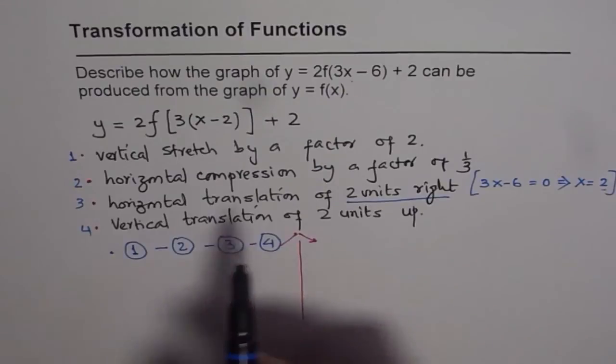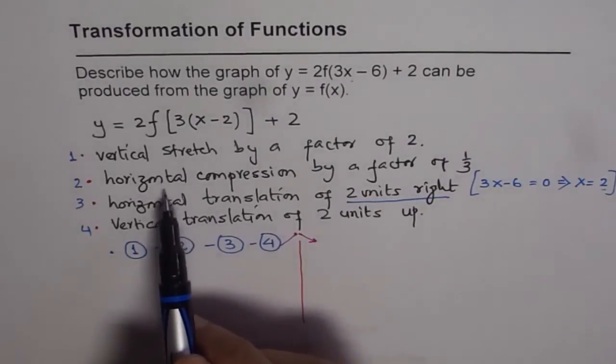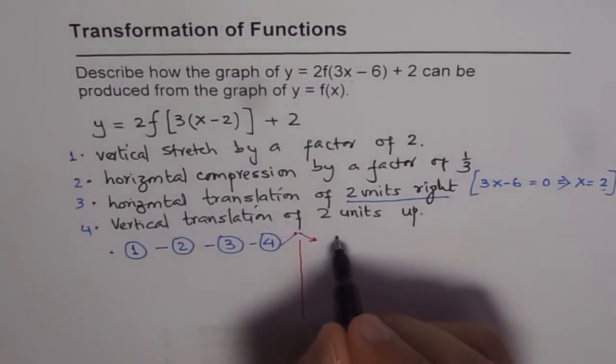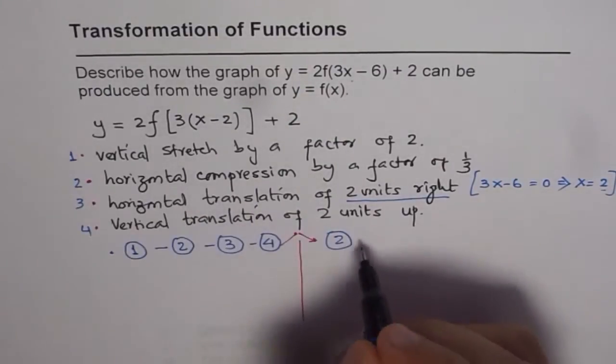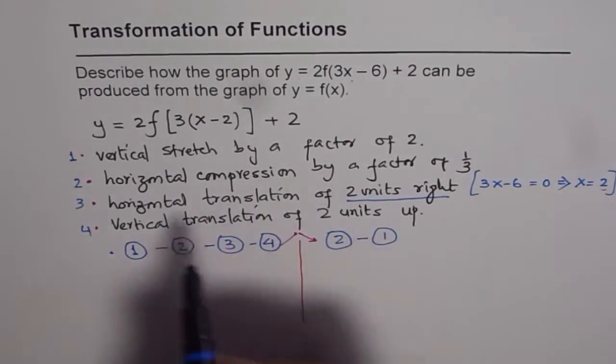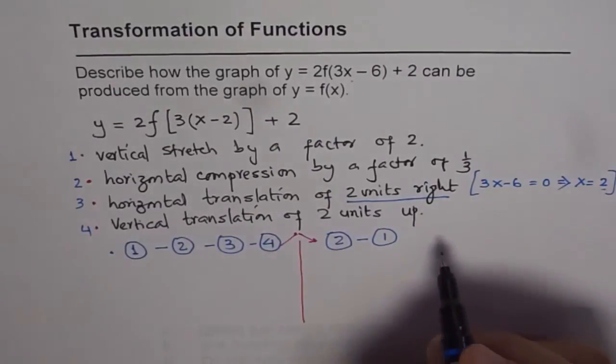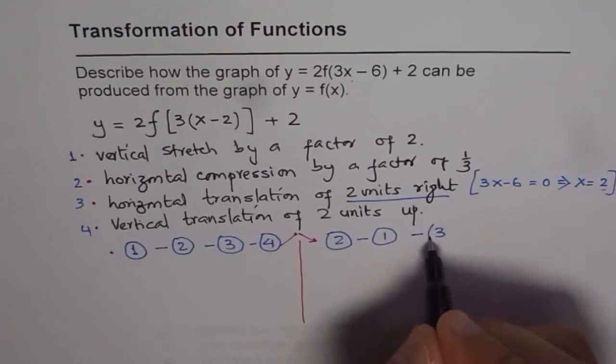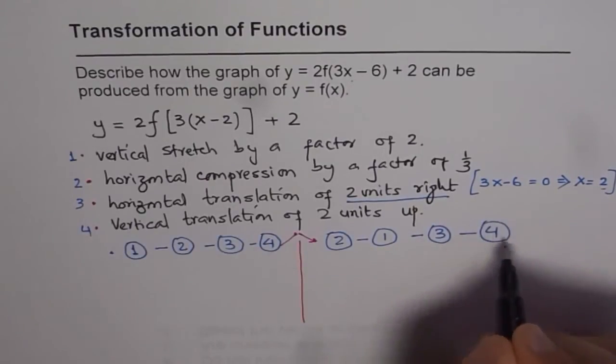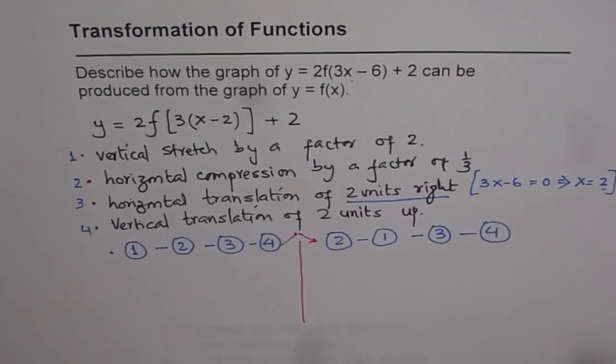Now, the other way could be, first you do step number 2, that is horizontal compression. So you could do step number 2. Once you do compression, then you do vertical stretch, step number 1, which is vertical stretch, and then you could do 3 and 4. So, this is another way of doing it.